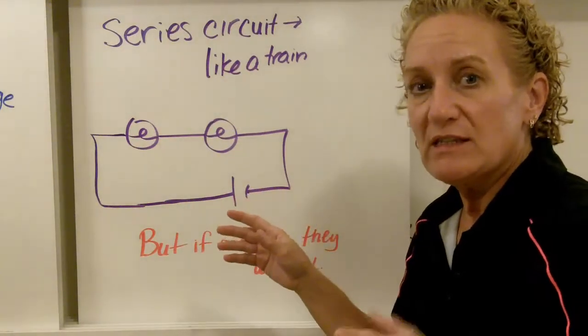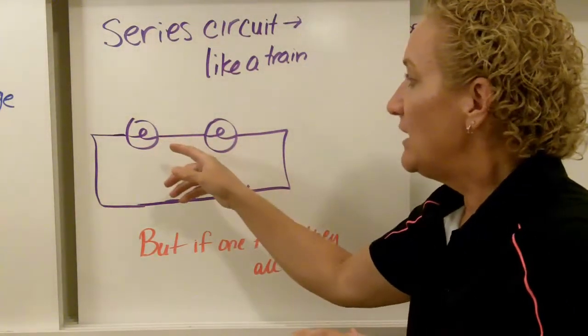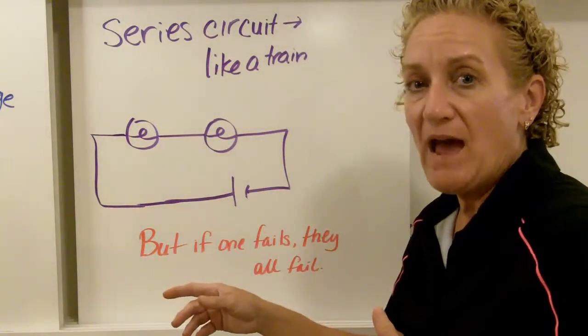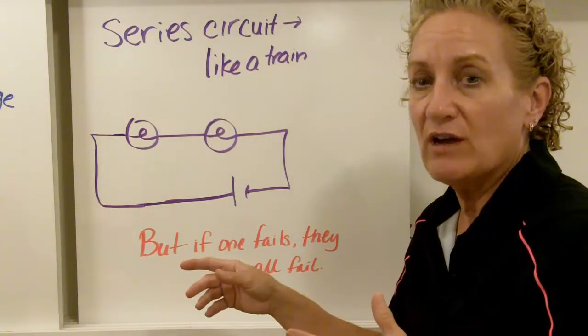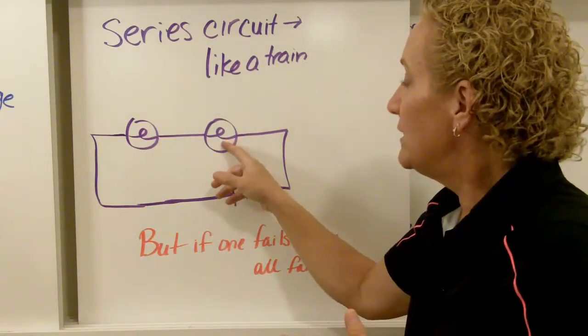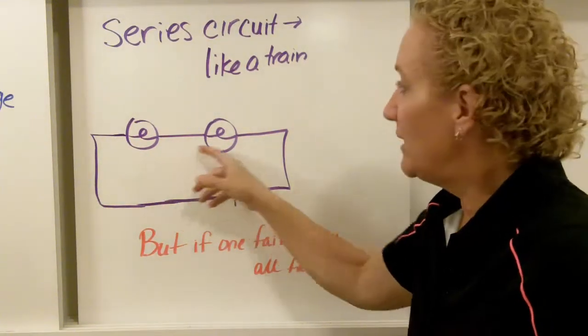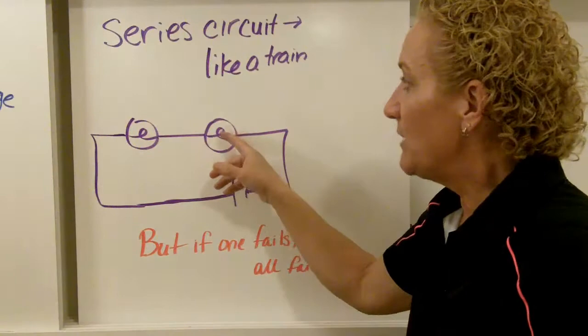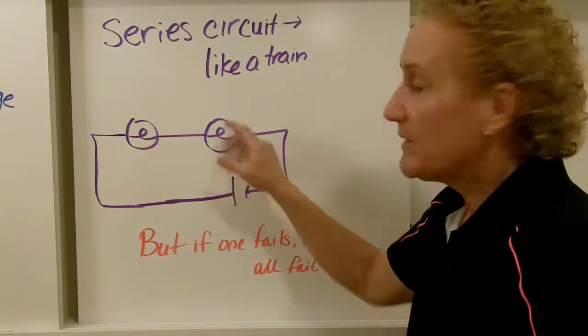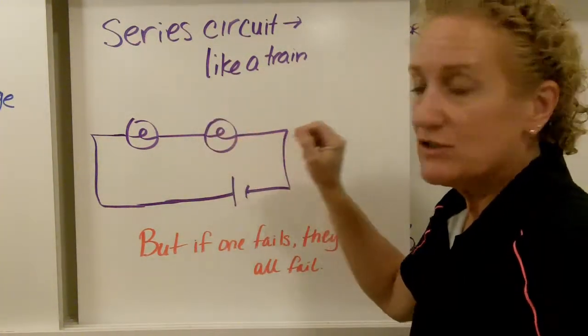The problem with series is that when one of these things goes out, you no longer have a path. So you have no electron flow. So if this light bulb for instance burned out, this one would also go out, even though it was perfectly fine because electrons would not be able to flow through there, therefore you would not have a complete circuit.